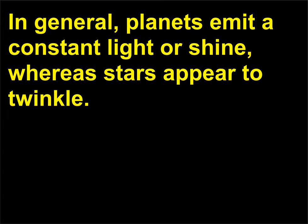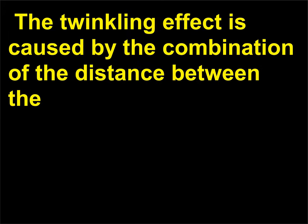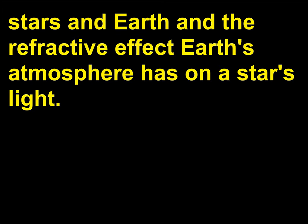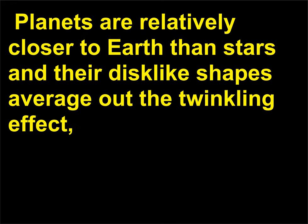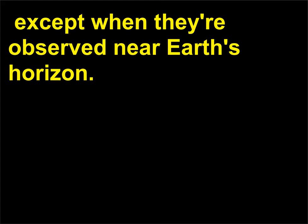In general, planets emit a constant light or shine, whereas stars appear to twinkle. The twinkling effect is caused by the combination of the distance between the stars and Earth and the refractive effect Earth's atmosphere has on a star's light. Planets are relatively closer to Earth than stars, and their disc-like shapes average out the twinkling effect, except when they're observed near Earth's horizon.